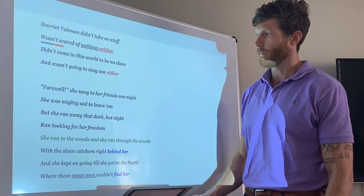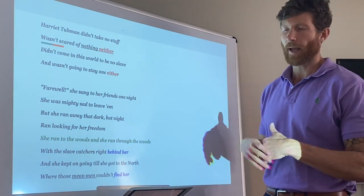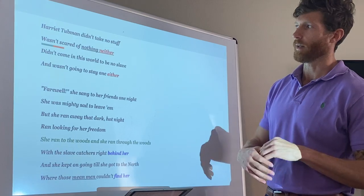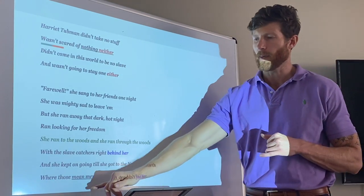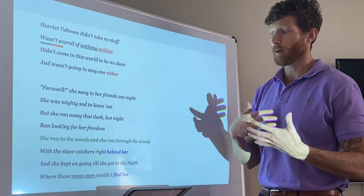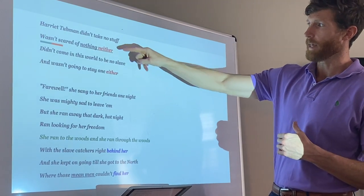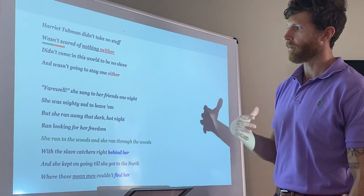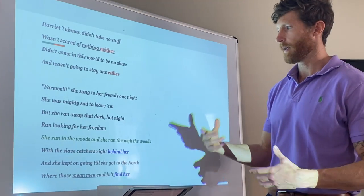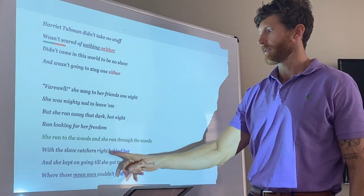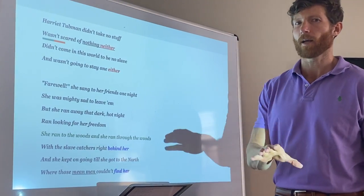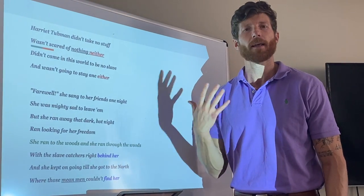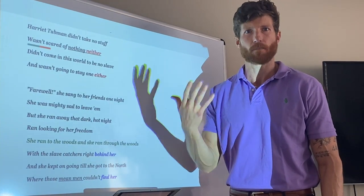Here's my annotation for sound devices I found in the poem. I underlined the use of alliteration: 'nothing neither' and 'mean men.' In terms of a rhyme scheme, we've got 'neither' and 'either,' and then 'behind her' and 'find her.' And for repetition, the author repeats this idea in the second stanza — 'she ran to the woods' and 'she ran through the woods.' The author is repeating this idea of her running to and through the woods, which must be a really important idea that adds meaning to the poem.